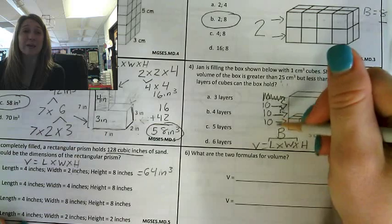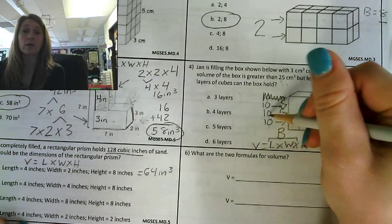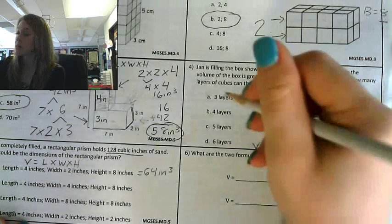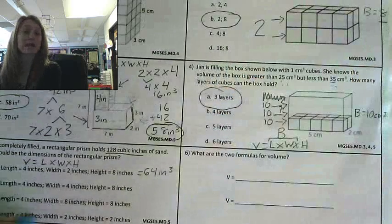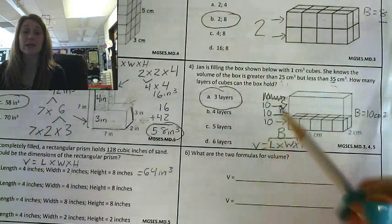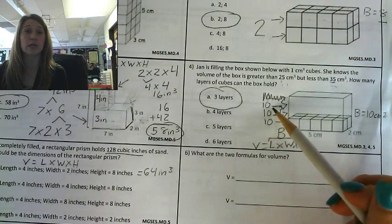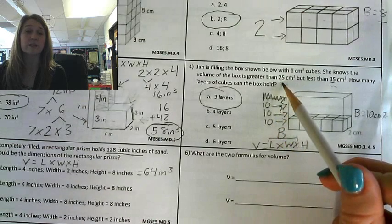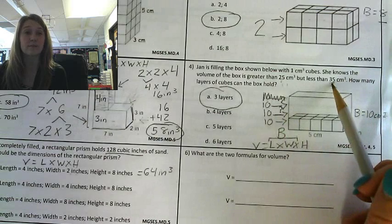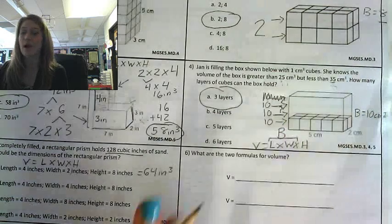So these are how many layers I can have. That's one, two, three. That's three layers when every layer is worth 10 because I increase by 10 each time. 10, 20, 30. And 30 is between 25 centimeters cubed and 35 centimeters cubed.